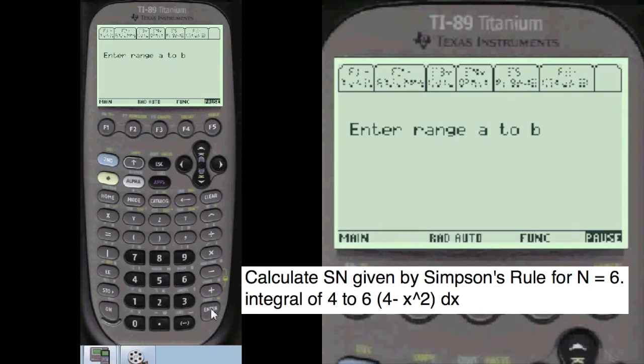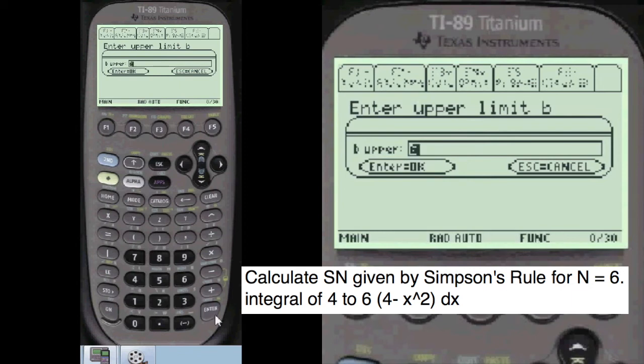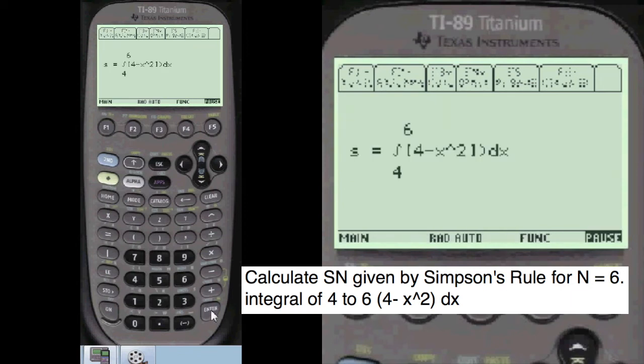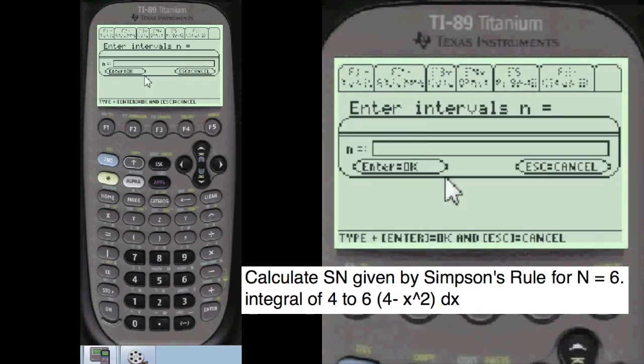And the range given is alpha 4 and alpha 6. That looks pretty good, we're going to say that's okay. And in the intervals given, they want it from six of them. Alpha 6.